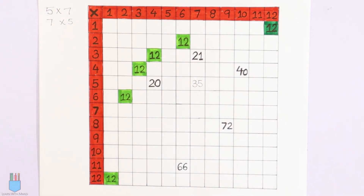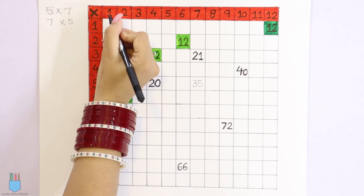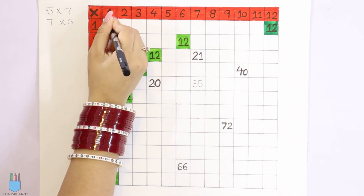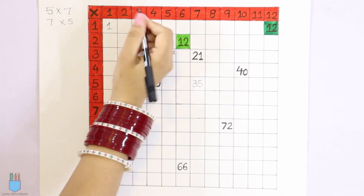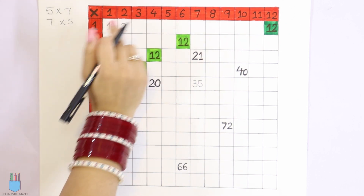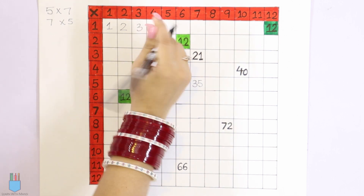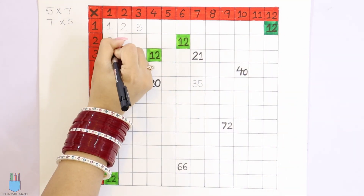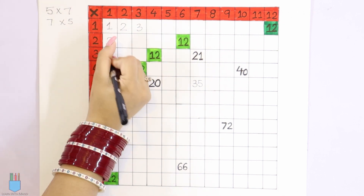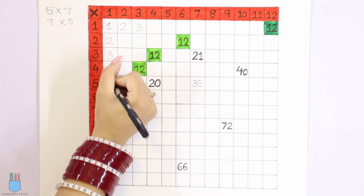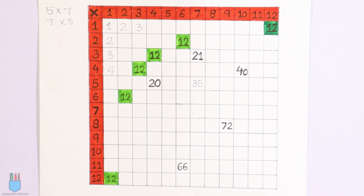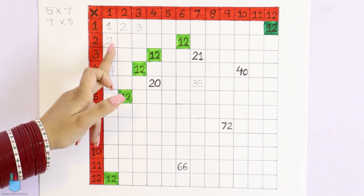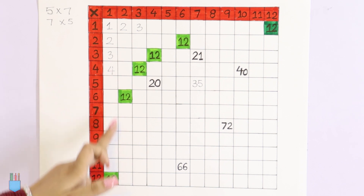When we start here, let's suppose we start with 1 into 1, because this box is 1 into 1. Then 2 into 1 is 2, 3 into 1 is 3, and so on. Then 1 into 2, 1 into 3 is 3, 1 into 4 is 4. So now let's see the pattern: here is the 1 times table — 1, 2, 3, 4 — like this.